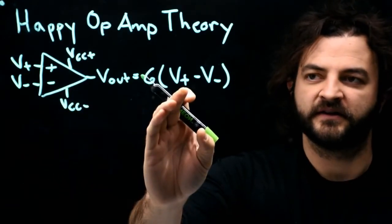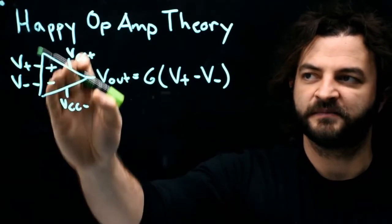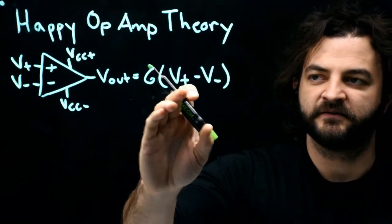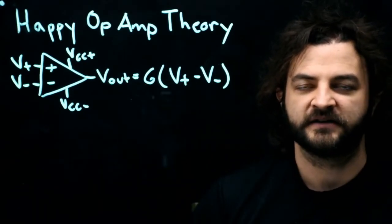So if V plus is ever bigger than V minus, the output goes as positive as it can go, and if V minus is bigger than V plus, the output becomes as negative as it can go.